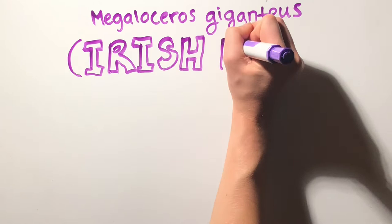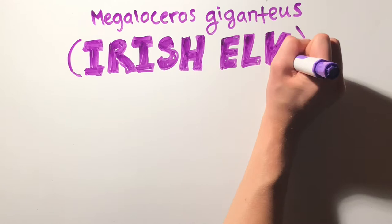Megaloceros giganteus, commonly known as the Irish elk, were a species from the family cervidae that went extinct about 7,000 years ago.